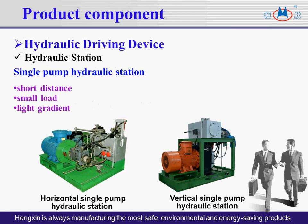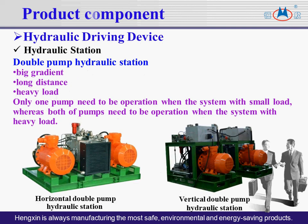The hydraulic single pump station mainly applies to short distance and small load transportation in roadways with a light gradient. According to installation method, there are horizontal single pump and vertical single pump hydraulic stations. The double pump hydraulic station is applicable for big gradient, long distance, and heavy load systems. Only one pump needs to operate under small load, whereas both pumps operate under heavy load. There are two installation forms: horizontal and vertical double pump hydraulic stations.